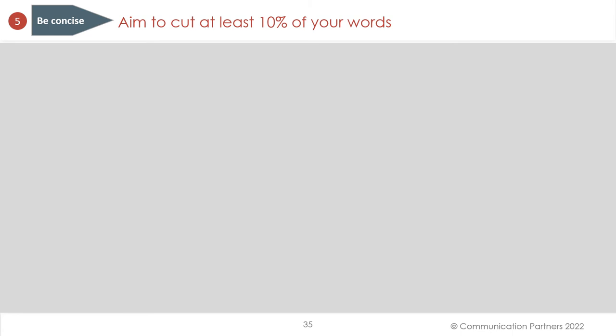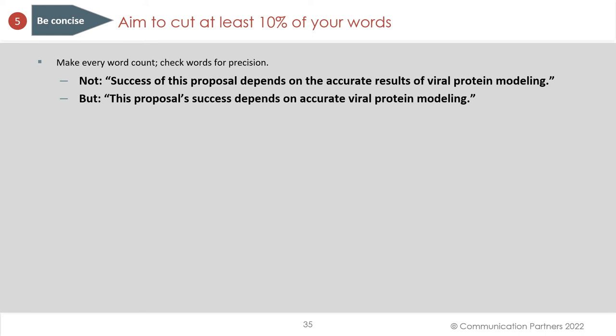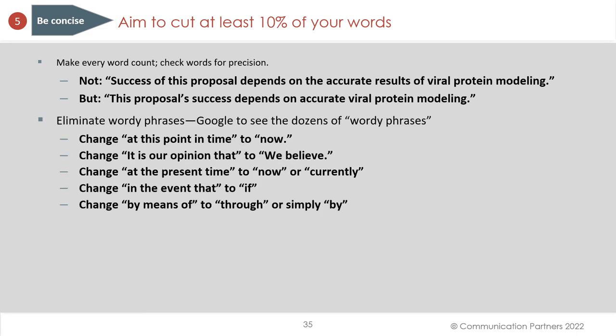Fifth principle: be concise. Aim to cut at least 10% of your words. With the page requirements on the NSF Career Grant and other grants, every word is precious — make every word count. Check your words for precision. 'Success of this proposal depends on the accurate results of viral protein modeling' becomes 'This proposal's success depends on accurate viral protein modeling' — the word 'results' is redundant. Eliminate wordy phrases: change 'at this point in time' to 'now,' 'it is our opinion that' to 'we believe,' 'at the present time' to 'now' or 'currently,' 'in the event that' to 'if,' 'by means of' to 'through' or 'by.' Watch out for wordy phrases — they are candidates for cutting.